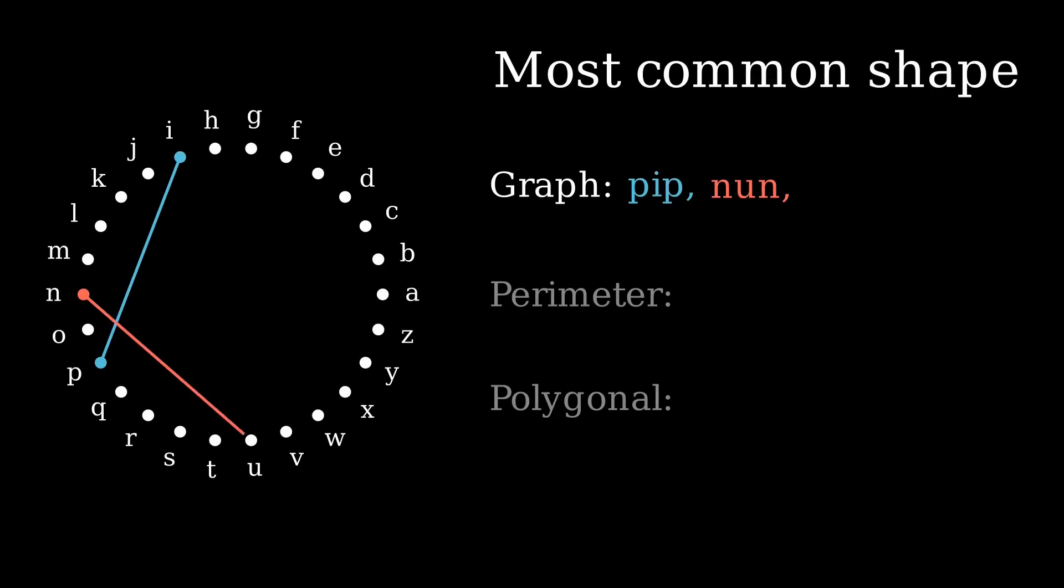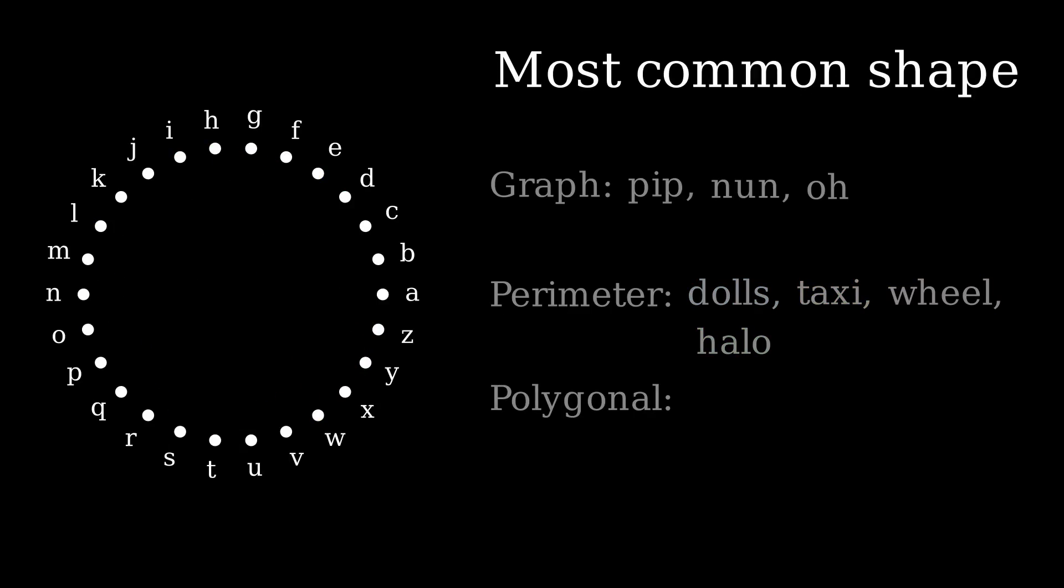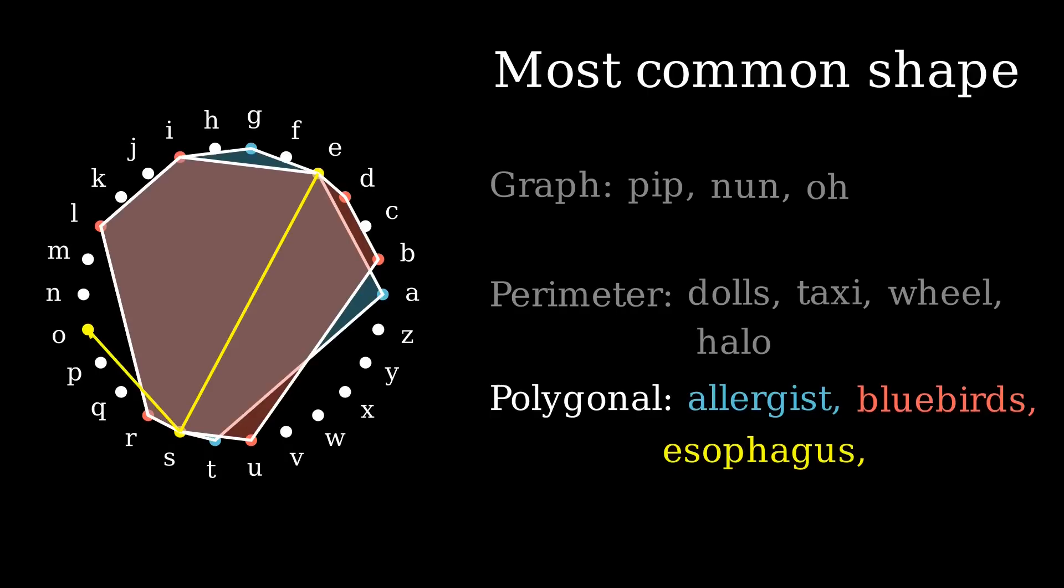The most common graph shape is shared by words such as pip, nun, and o. Just a two-letter line between letters seven spaces apart on the letter wheel. Looking at perimeter shapes, the most common is shared by words such as dolls and taxi, wheel, and halo. The most common polygonal shape is words like allergist, bluebirds, esophagus, and whiskery.